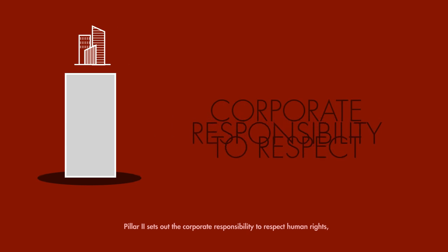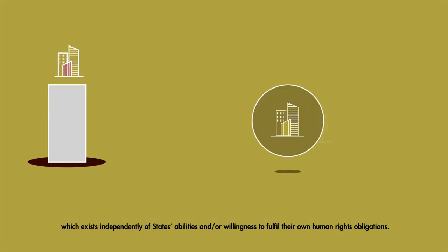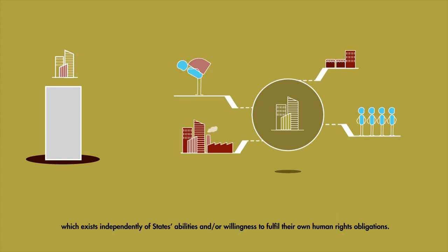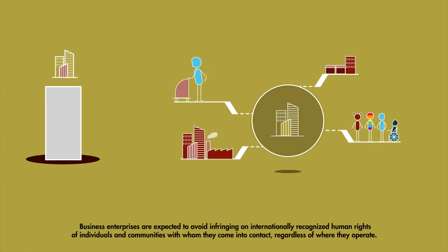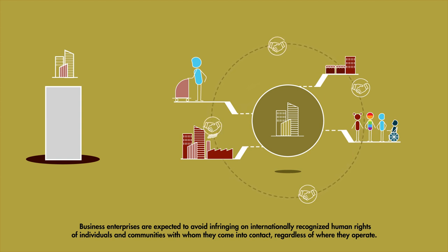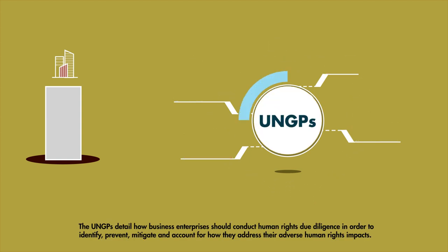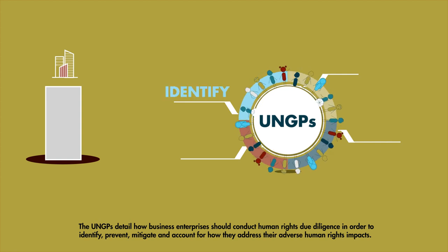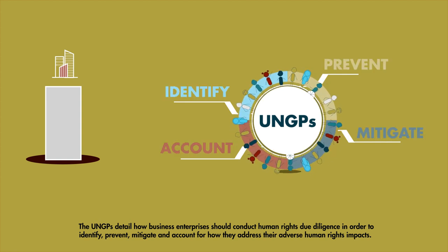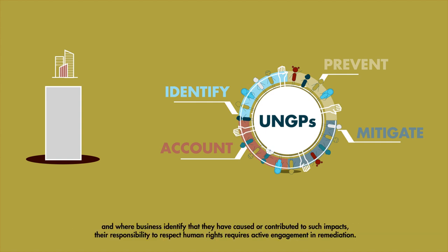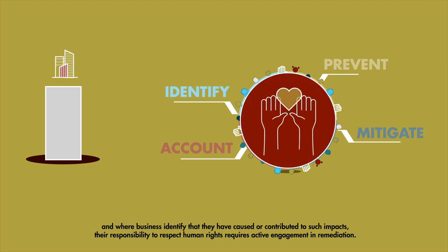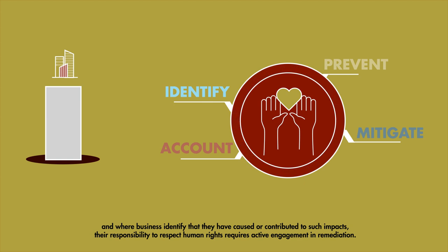Pillar 2 sets out the corporate responsibility to respect human rights, which exists independently of states' abilities and/or willingness to fulfill their own human rights obligations. Business enterprises are expected to avoid infringing on internationally recognized human rights of individuals and communities with whom they come into contact, regardless of where they operate. The UNGPs detail how businesses should conduct human rights due diligence in order to identify, prevent, mitigate, and account for how they address their adverse human rights impacts. However, even with the best policies and practices in place, adverse human rights impacts will occur, and where businesses identify that they have caused or contributed to such impacts, their responsibility to respect human rights requires active engagement and remediation.